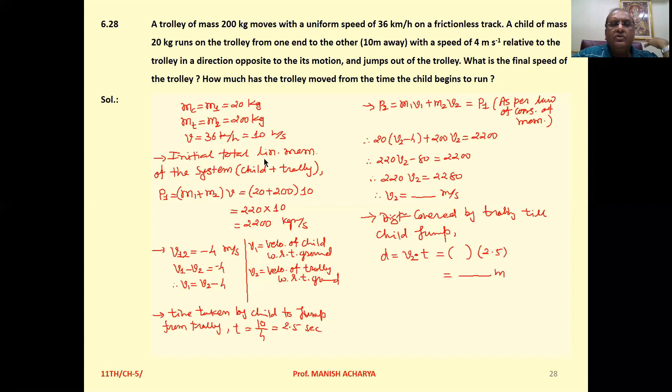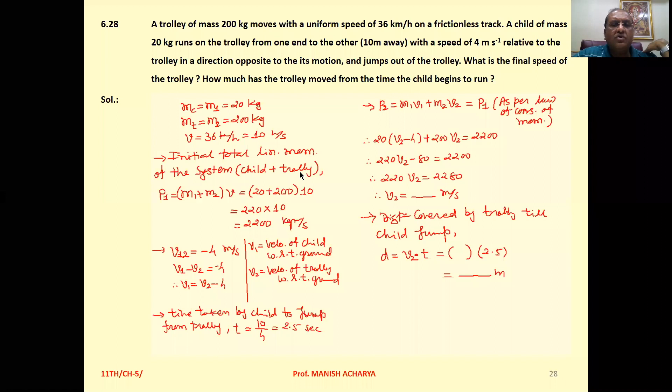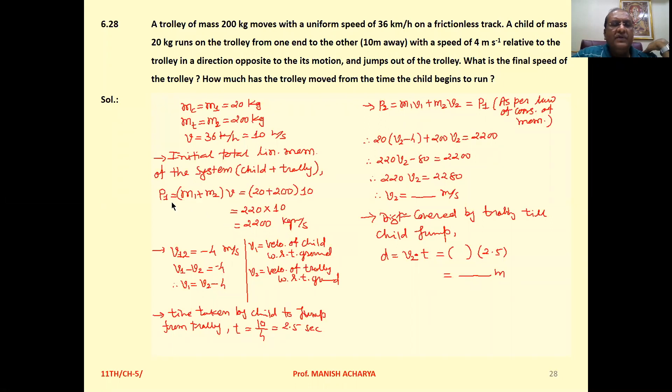The initial total linear momentum of the system, child plus trolley, is P1 = (M1 + M2) × speed. So that is (20 + 200) × 10 = 2200 kg·m/s.